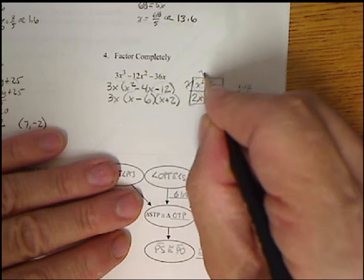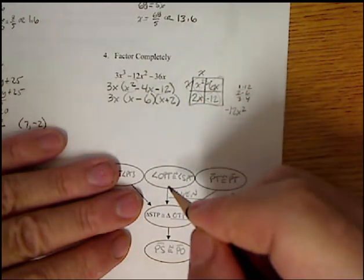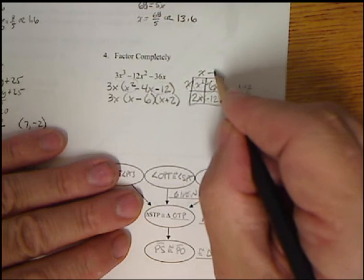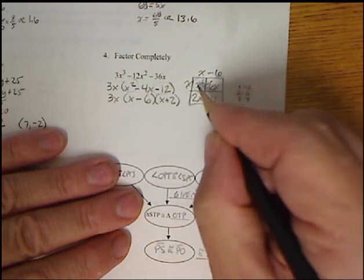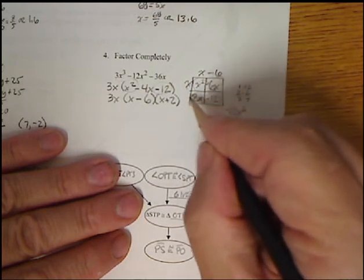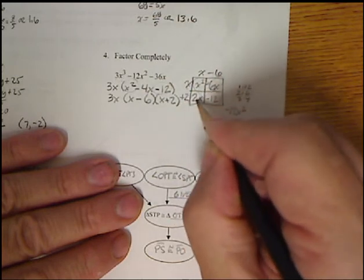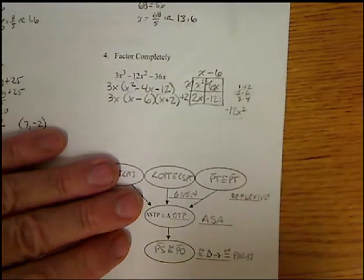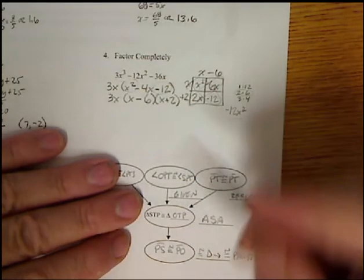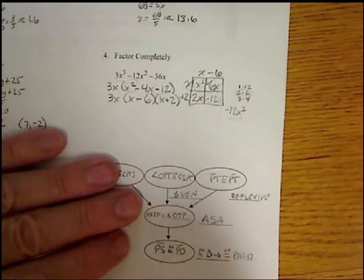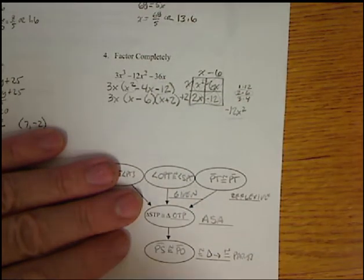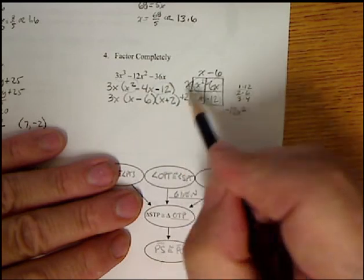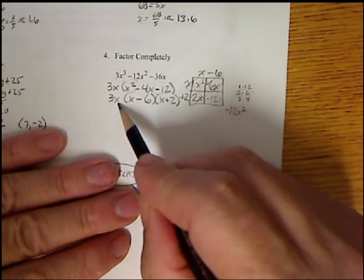x times x gives me x squared. x times negative 6 gives me negative 6x. x times 2 gives me 2x. And then verify it. 2 times negative 6 is negative 12. Make sure that you didn't make a mistake in terms of figuring out these two numbers. So that means it factors to x minus 6 and x plus 2. I still have the 3x out in front.